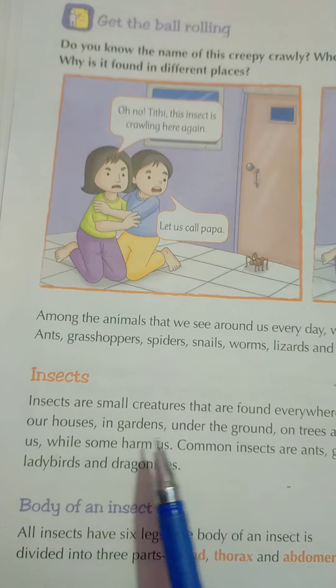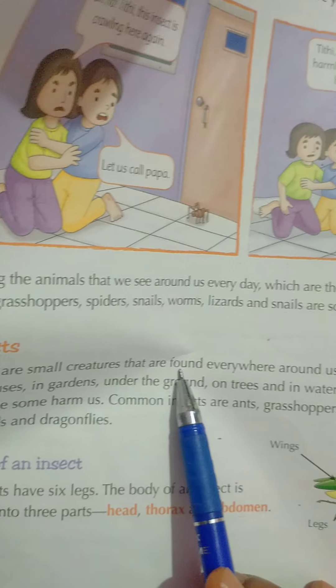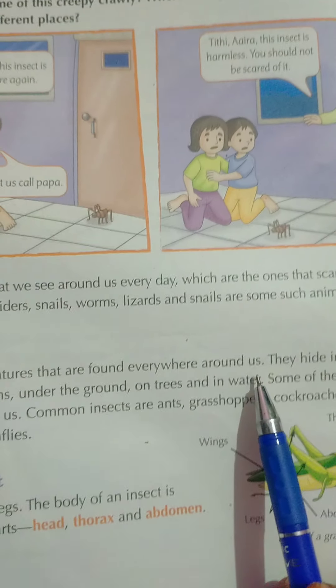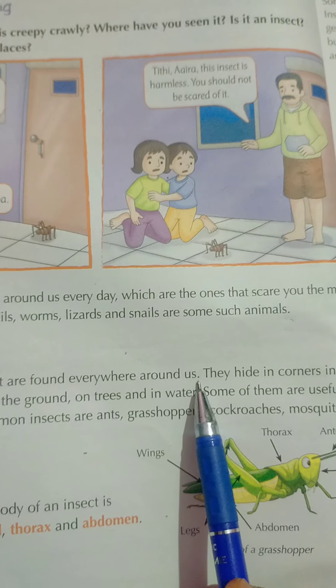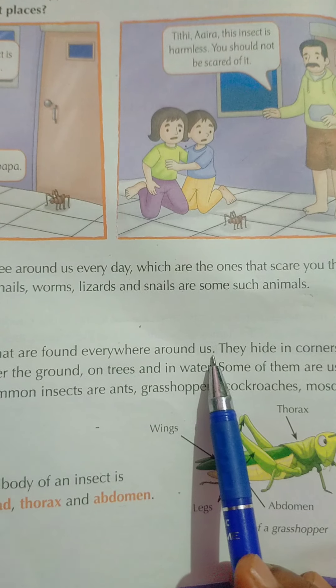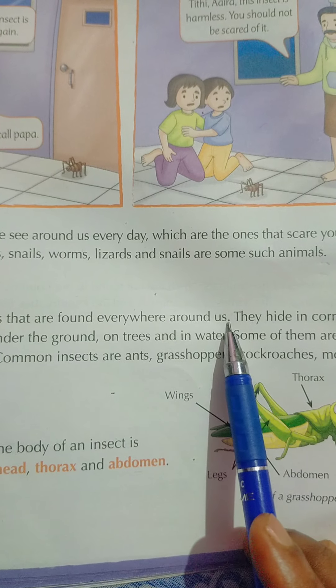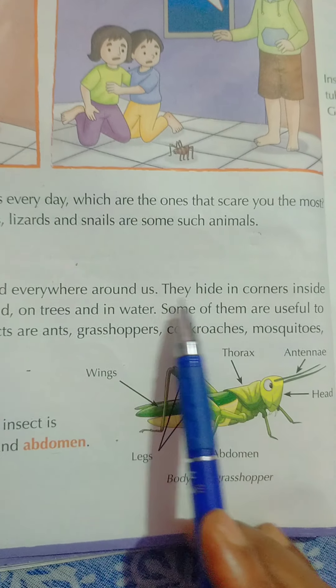Insects are small creatures that are found everywhere around us. Insects एक छोटा जानवर हैं, जिसे हमारे चारों ओर मिलता हैं।